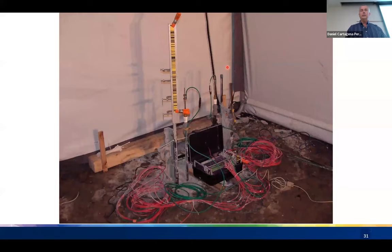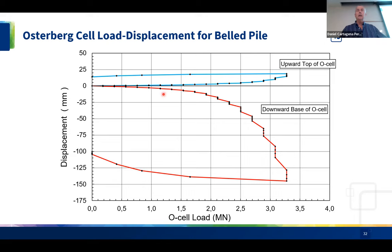Here are the results from the O-cell test. Load is gradually applied; the bottom plate moves downward measuring bearing resistance, and shaft friction is measured in the other direction. On unloading, you can see the return curves. The key observation is that shaft friction required much less movement than end bearing — approximately 20 mm of movement in shaft friction versus 150 mm in end bearing.